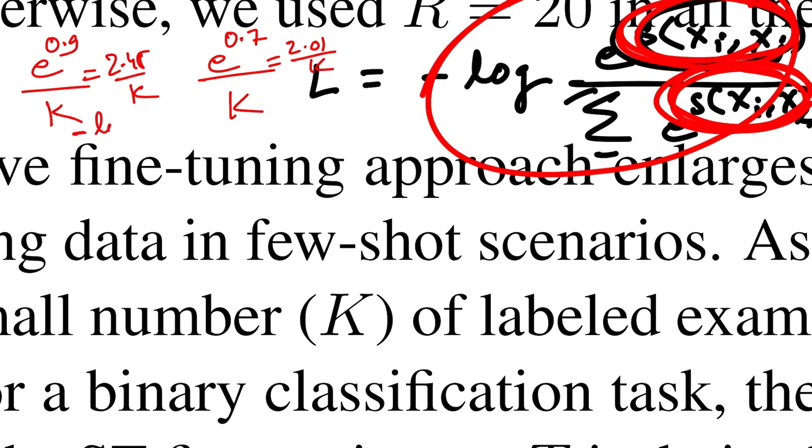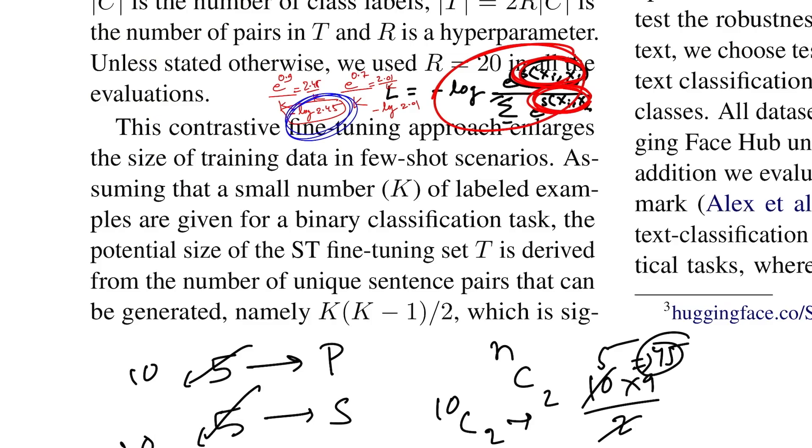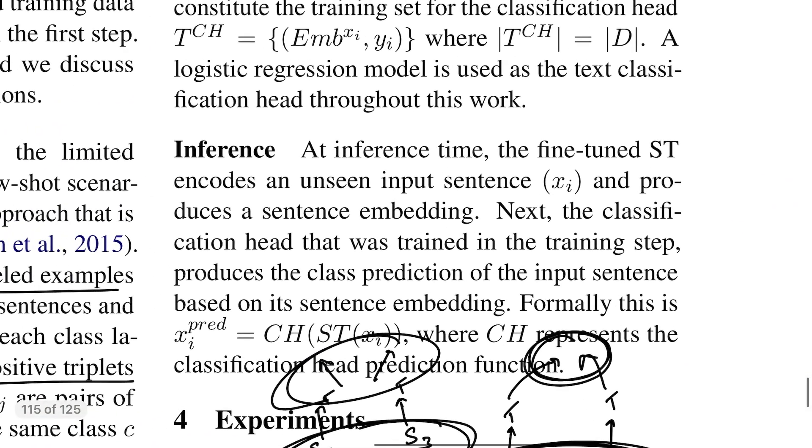This calculates to 2.45 divided by K, this calculates to 2.01 divided by K. Since K is common, we need not worry about it. Eventually this becomes minus log of 2.45 and this becomes minus log of 2.01, which makes this a smaller entity, and that is what we wanted.